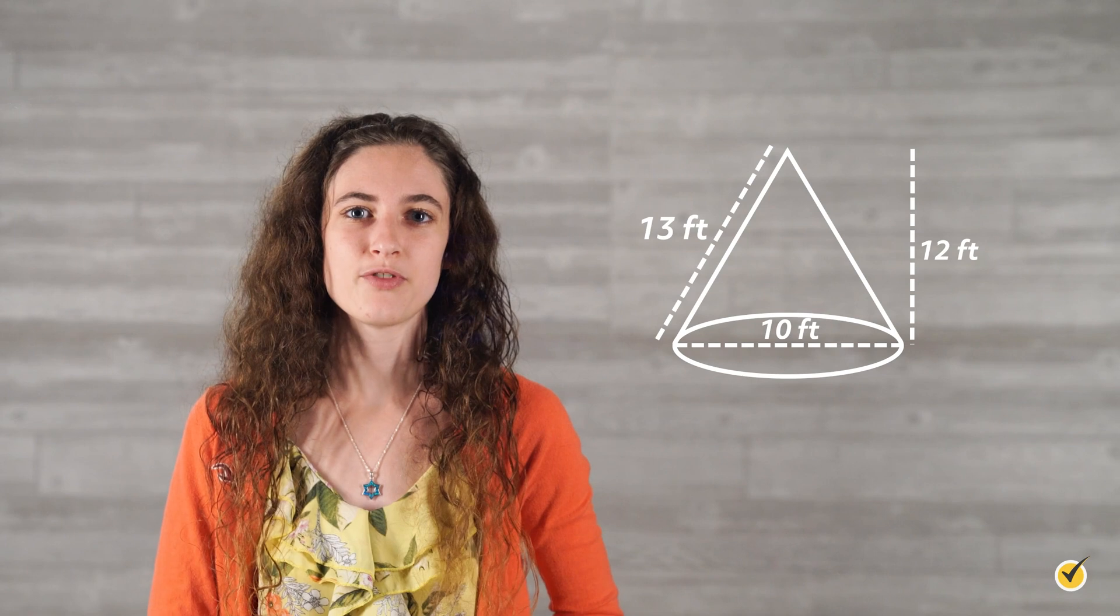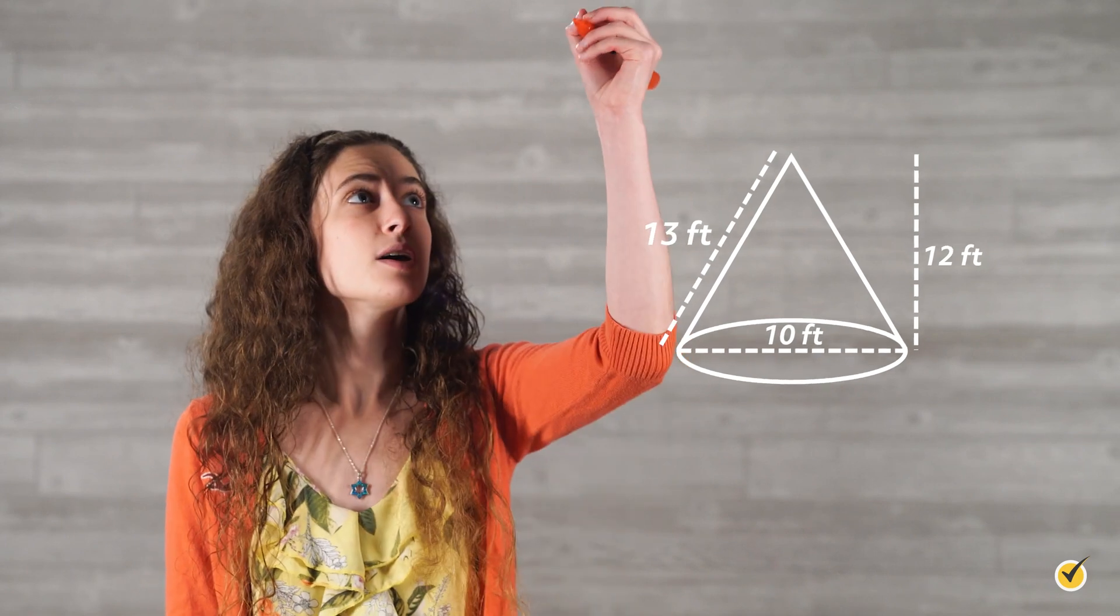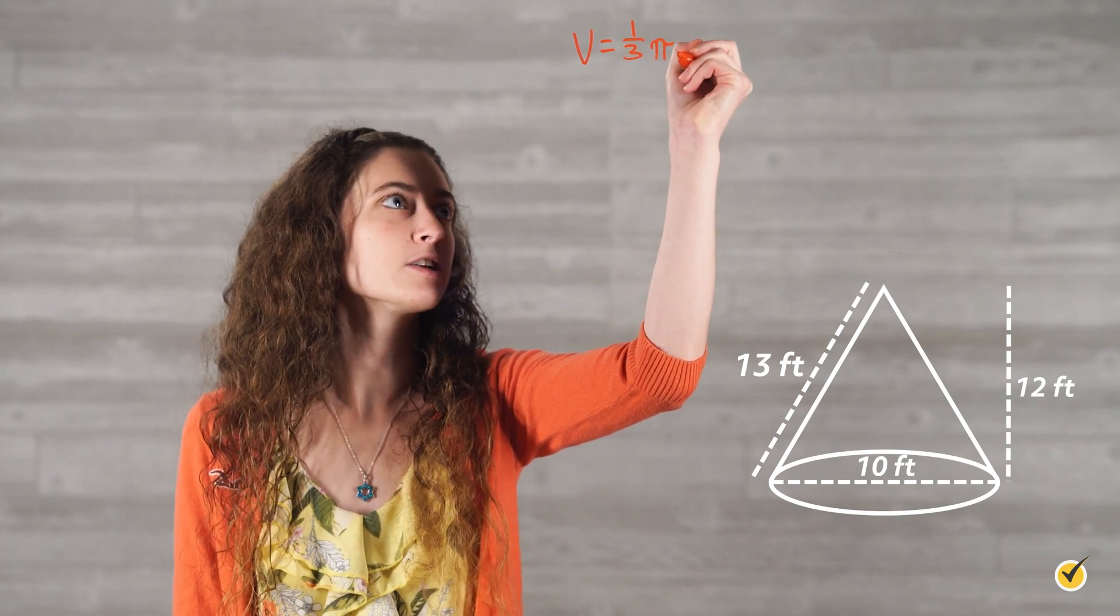We know how to find this cone's surface area and volume. First, let's work on the volume. Again, we have that volume equals one-third pi r squared h.